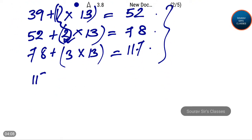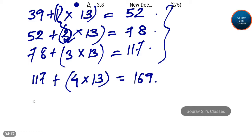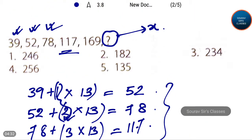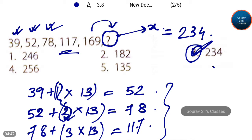Continuing the pattern: 117 plus 4 times 13 gives 169. And 169 plus 5 times 13 is equal to 234, and this is equal to x. So option 3, that is 234, is the correct answer. The last term of the series is 234.